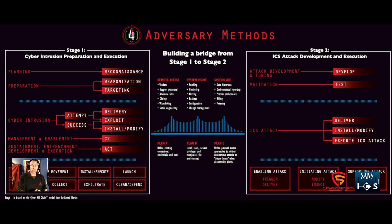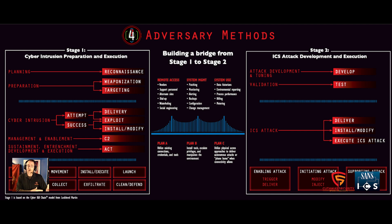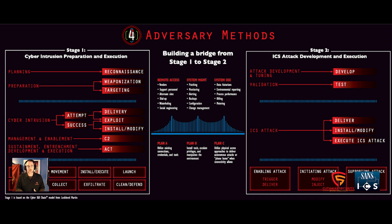They need to leverage the information gathered to get into the control network, if that's their goal. Stage two will be the control network. Once they're able to get onto systems within the control network, they'll attempt to repeat many of stage one's steps. If they get onto another workstation, laptop, or HMI within the control network, they'll need to gather additional information and more credentials — credentials that provide the access they need. So they'll still do some steps from stage one to further their means in stage two.